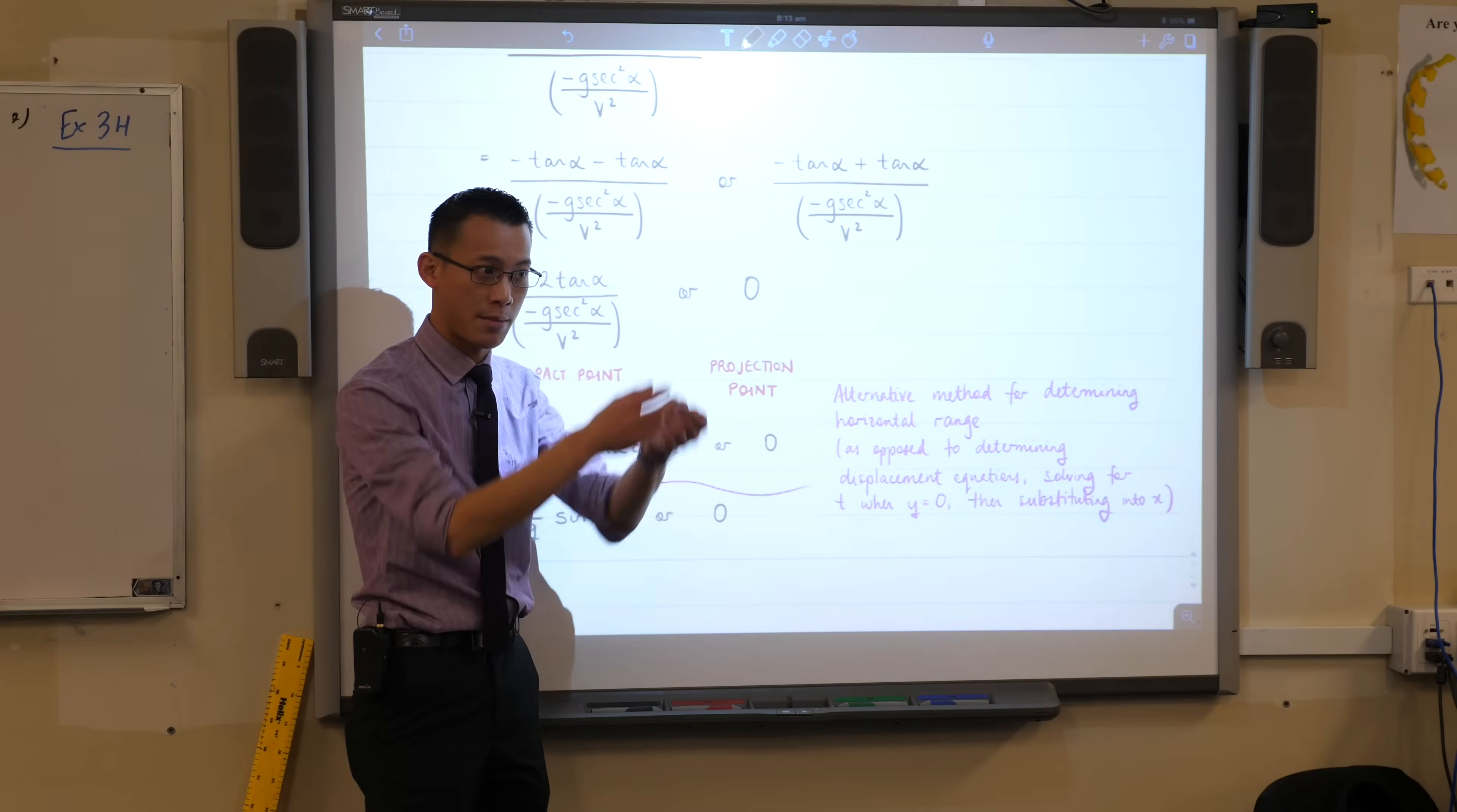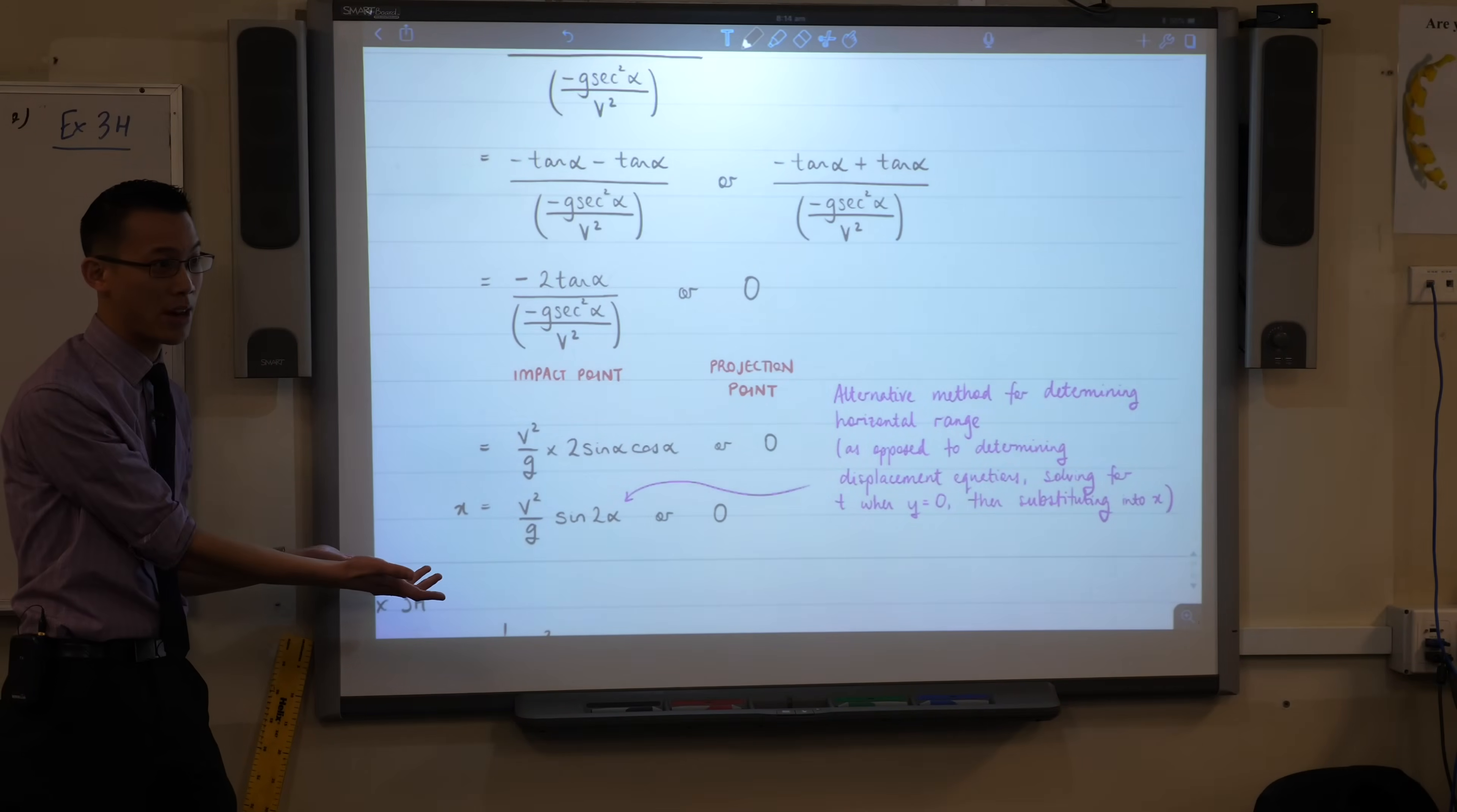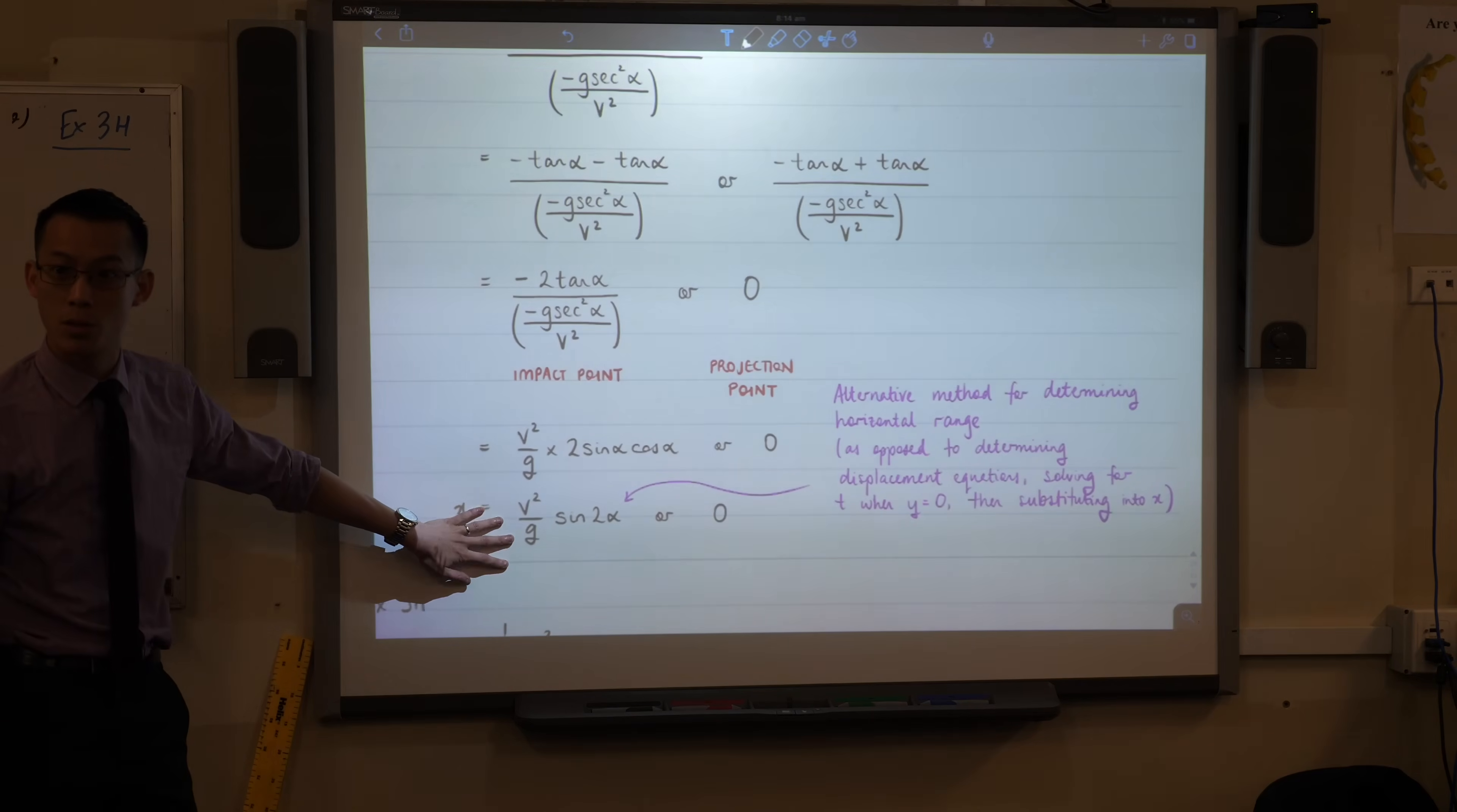So you can do that, sometimes you have no choice, sometimes you're required to do that through several parts. But if you can, if all you're asked for is the impact point, and you're given initial velocity, initial angle, then you're there. It's a really simple equation, it's a very elegant way to do it. So after all of that work, going through those six equations, you can actually take all those six equations out of the running, if you actually go ahead and use this result.